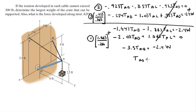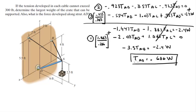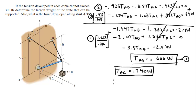Plugging T_AB = 0.686W back into Equation 1 and solving for T_AC gives T_AC = 0.740W. Plugging both values into Equation 2 to solve for F_AD gives F_AD = -1.37W.